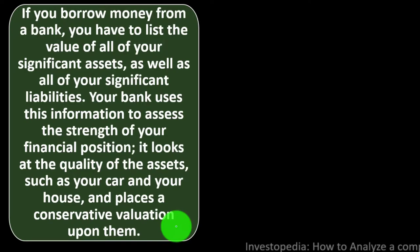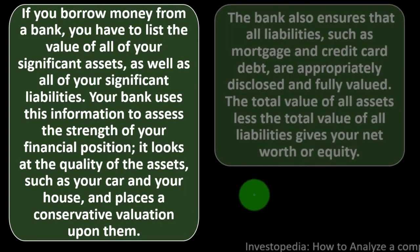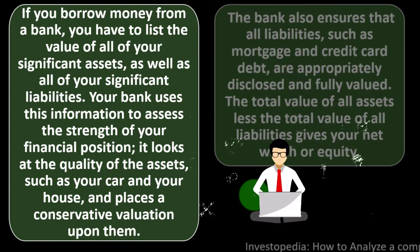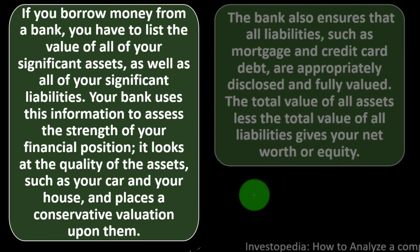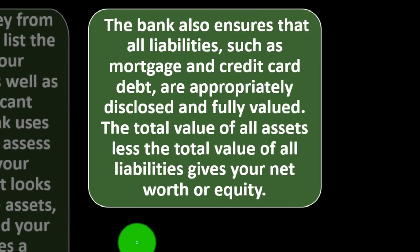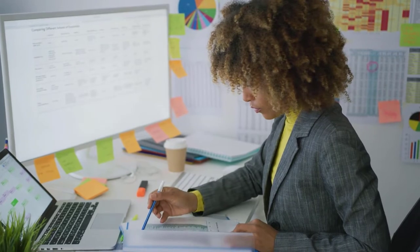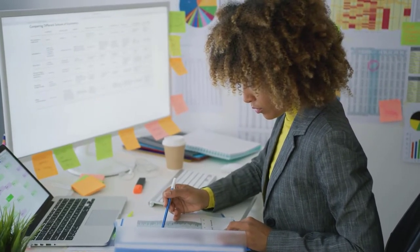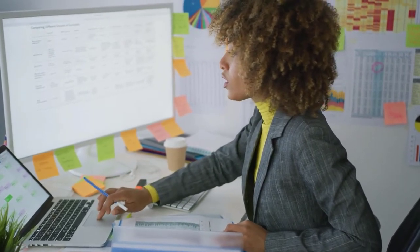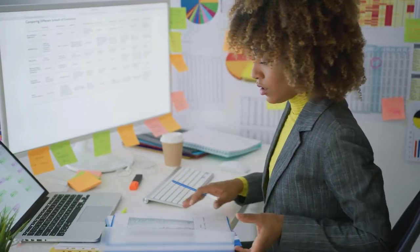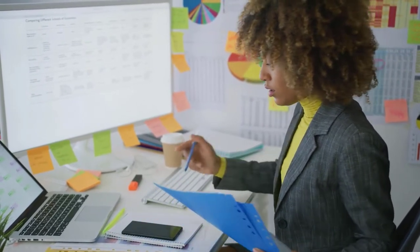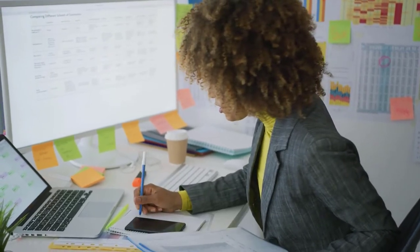Your bank assesses the quality of your assets — like your car and house — and places a conservative valuation on them, erring on the side of undervaluing assets to ensure you can repay the loan. The bank also ensures all liabilities, such as mortgage and credit card debt, are fully disclosed and valued. Transparency about liabilities is also what we hope for in publicly traded companies.